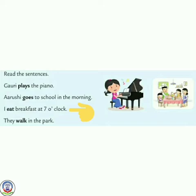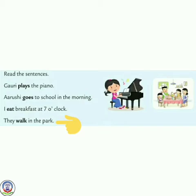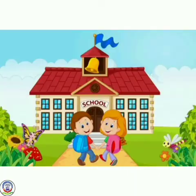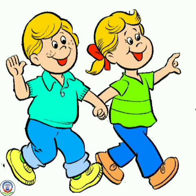I eat breakfast at seven o'clock. Maine naasta saat baje kiya. Is sentence mein 'eat' word jo hai, wo action word hai. They walk in the park. Here, 'walk' shows that someone is doing an action. So students, dekha aap ne? All sentences have a doing word. Plays, goes, eat, and walk are doing words.